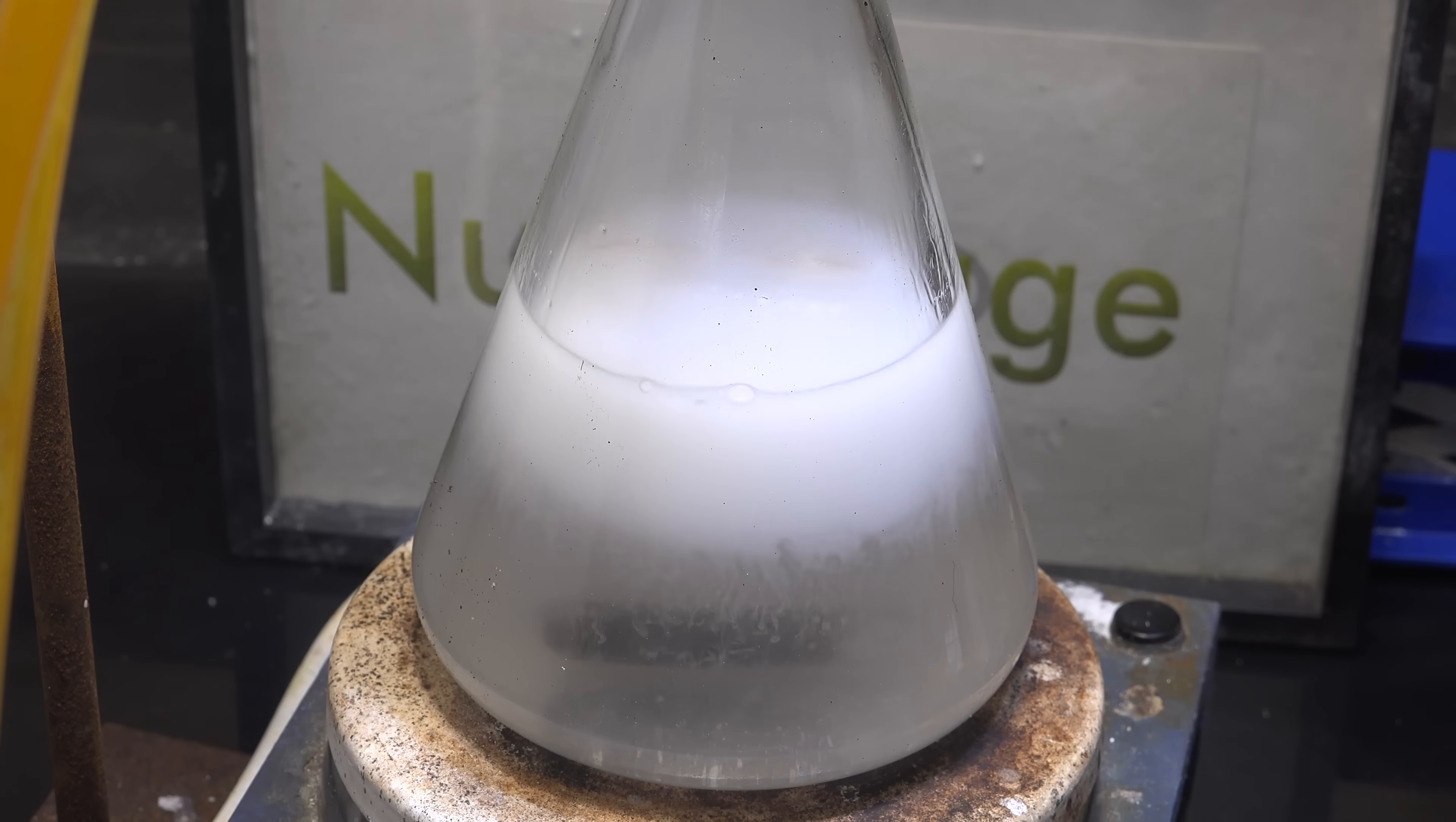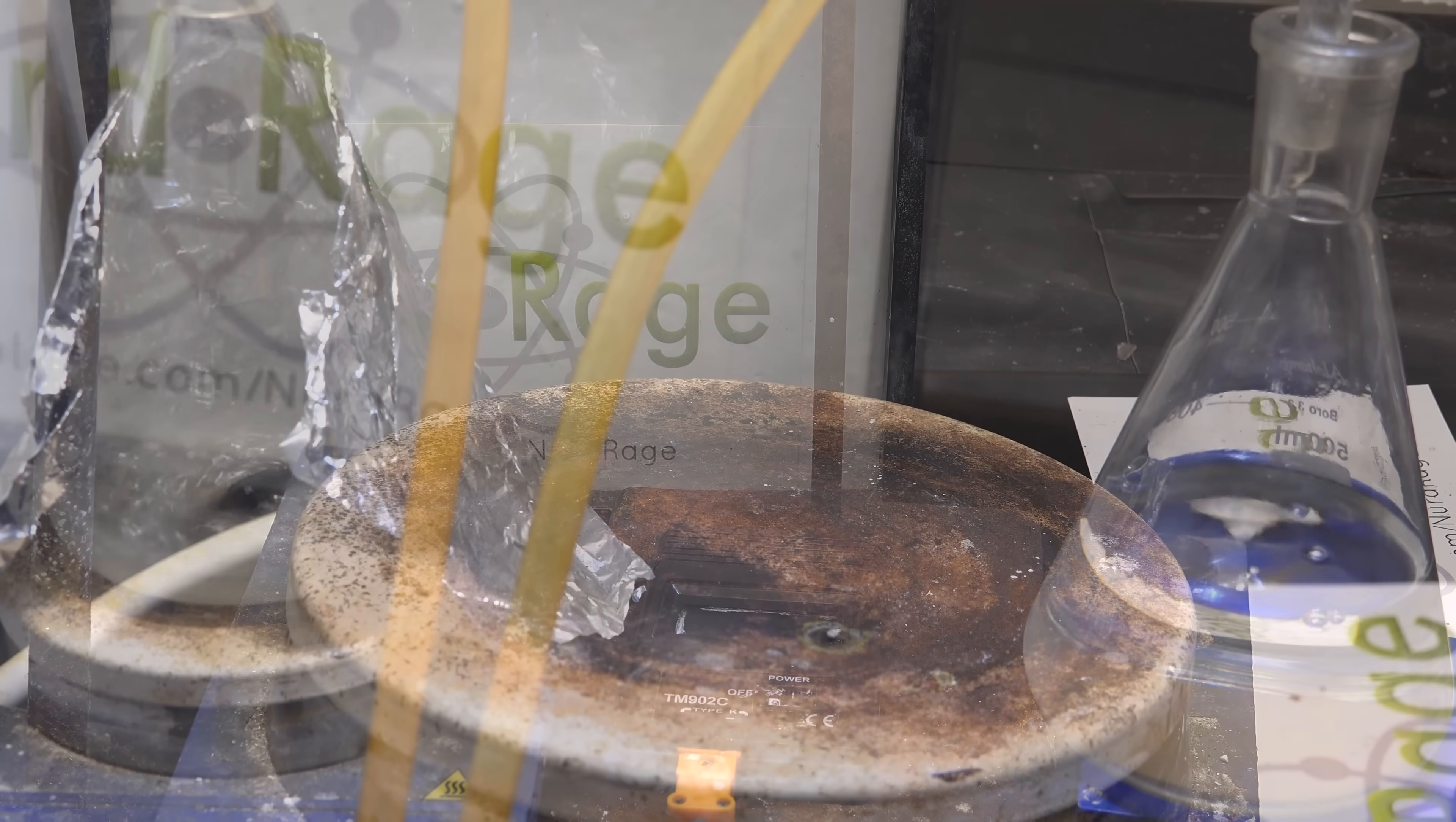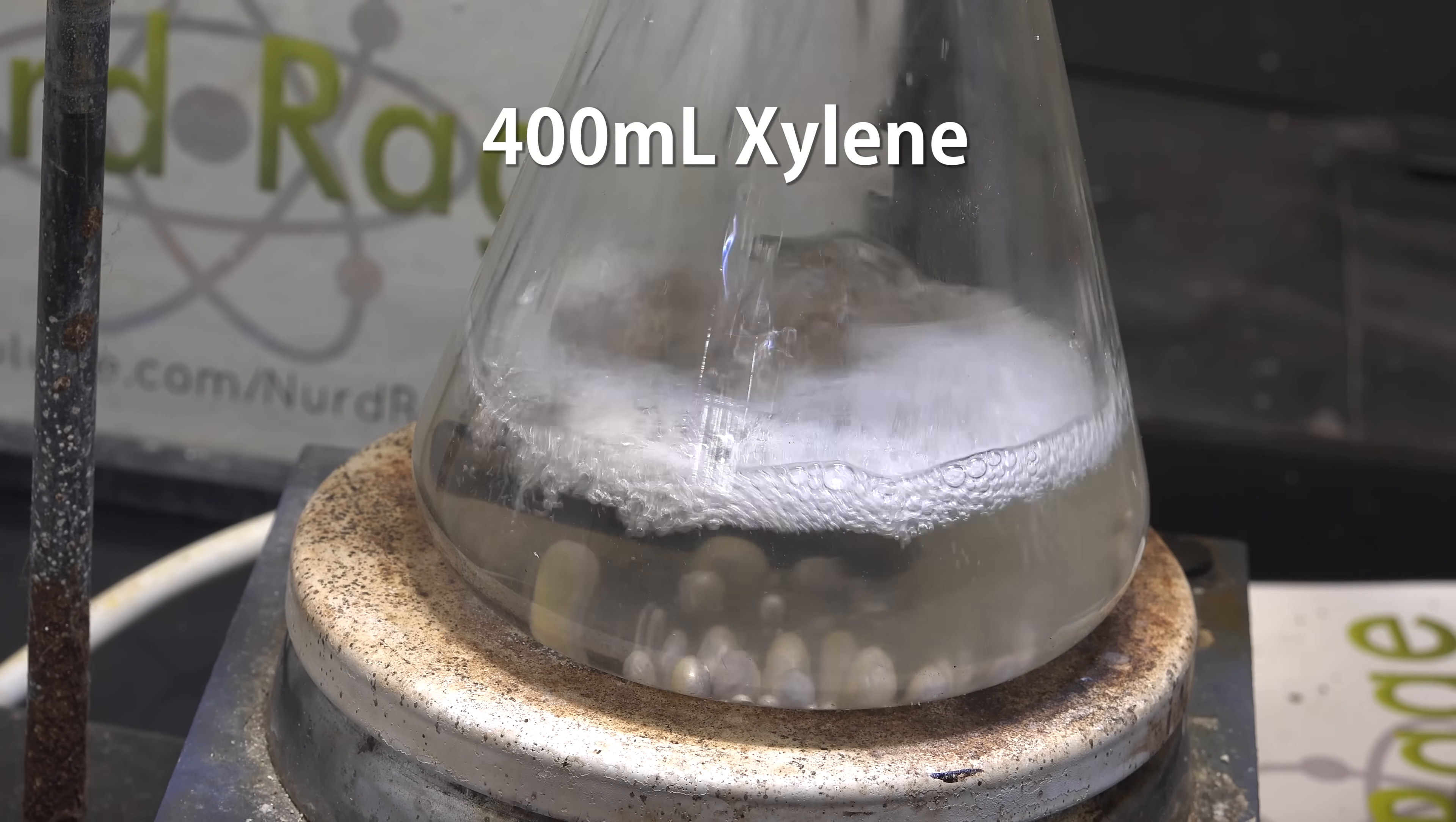As well as a chaser solvent to improve distillation. First we need to prepare purified xylene. This will be our chaser solvent to ensure higher yielding distillation. We get some sodium metal, about 5 grams that we made in a previous video and add on top some xylene.